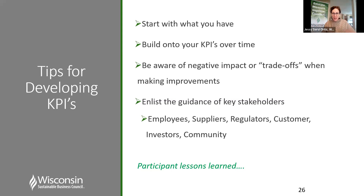Start with where you're at and build on those KPIs over time. Be aware of negative impacts or trade-offs when making improvements — from a systems thinking perspective, sometimes changing out a material might have really good benefits from a product circularity standpoint, but make sure you understand the effects on product quality and use on the back end. There are lots of trade-offs in sustainability, so doing your research and understanding what those trade-offs are is important.